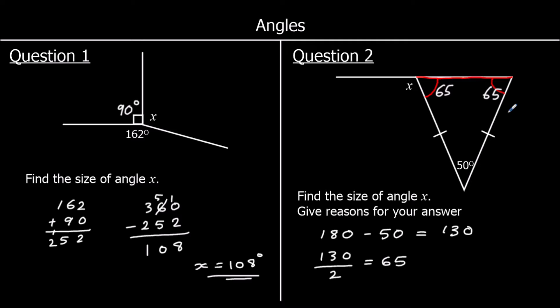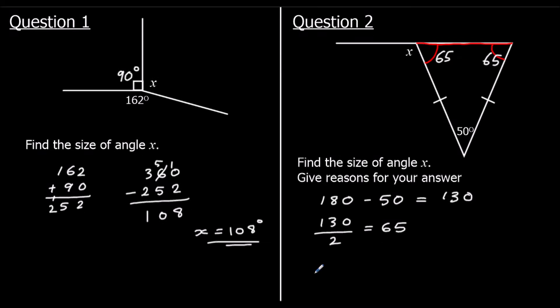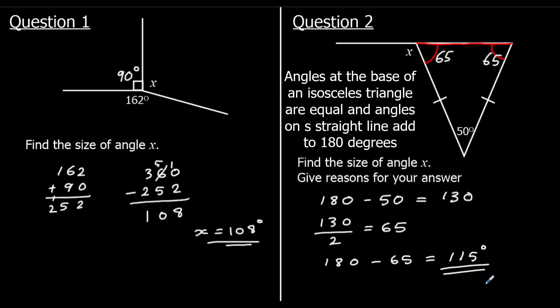So what is X? X is on a straight line with 65, and angles on a straight line add up to 180 degrees. So if we do 180 take away 65: 180 take away 60 is 120, then take away 5 is 115. So X is 115 degrees.